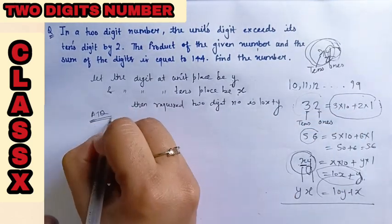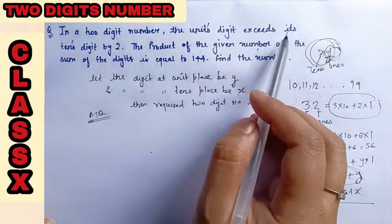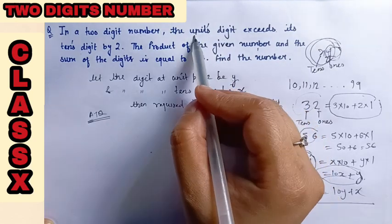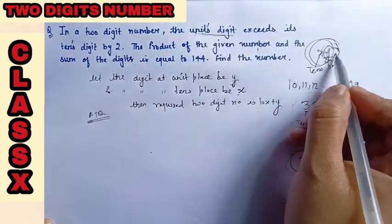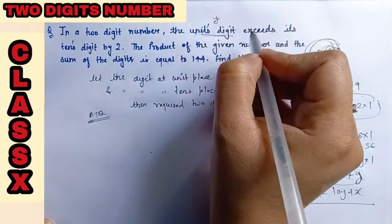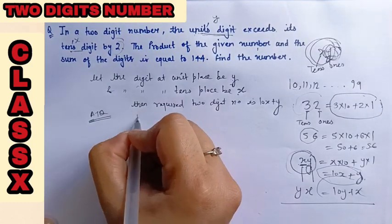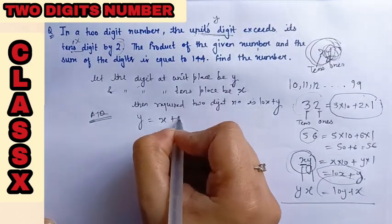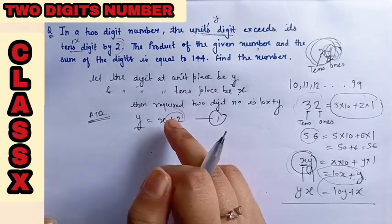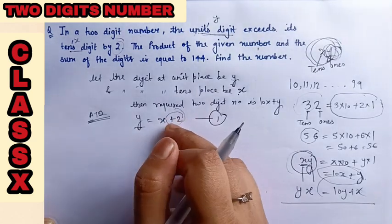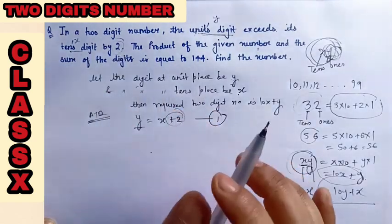According to the question, the unit digit exceeds the tens digit by 2. The unit digit is y, and it exceeds the tens digit. So the first equation is y equals x plus 2. Simple equation 1: unit digit is exceeding, exceeding means greater than, by 2, so x plus 2.